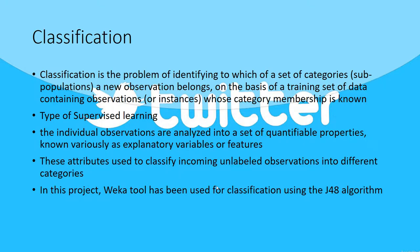Now let's move to the topic of classification. Classification is a problem of identifying which set of categories a new observation belongs to, on the basis of a training set of data whose categories were known. This is a type of supervised learning in which individual observations are analyzed on the basis of particular attributes associated with that observation. These attributes can be used to classify new incoming data into categories that we have already defined. In our project we use the Weka tool to do the classification, using the J48 classification algorithm.